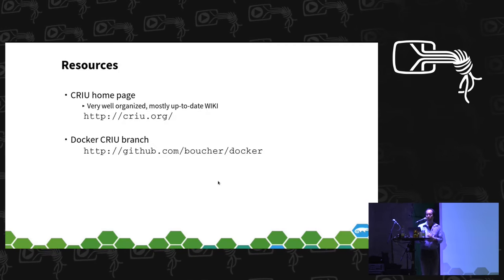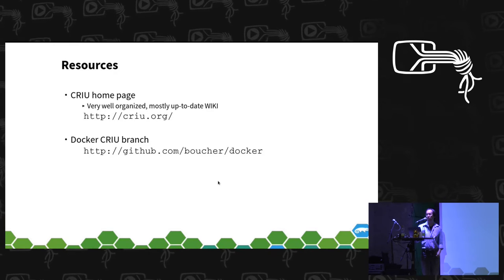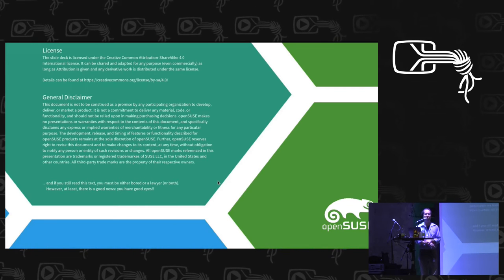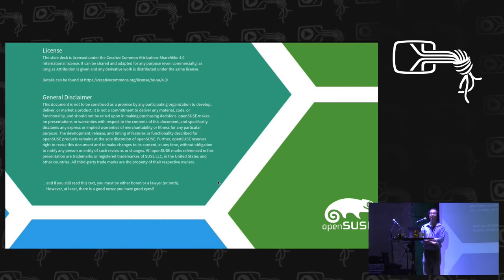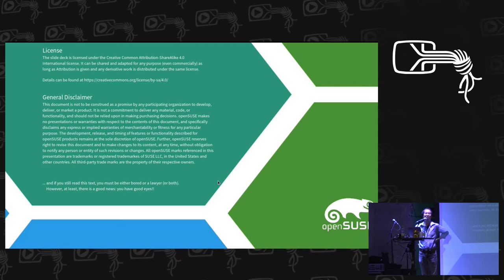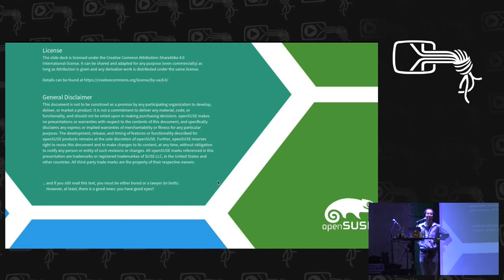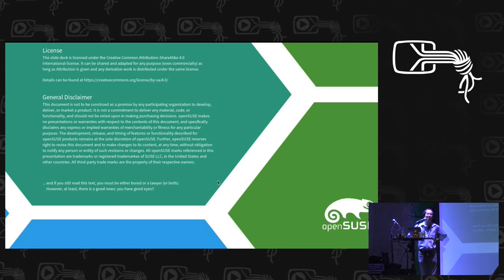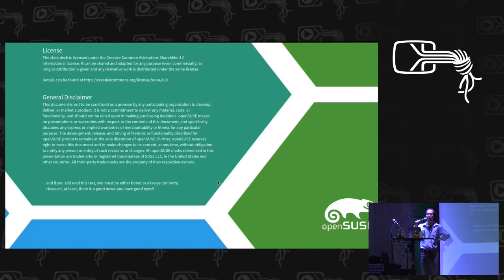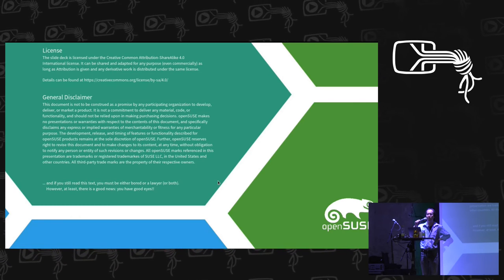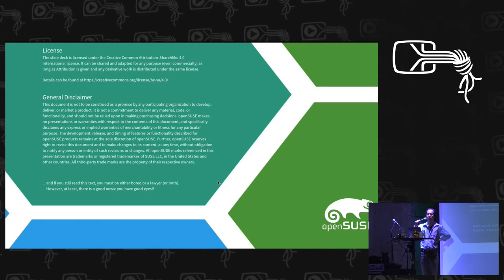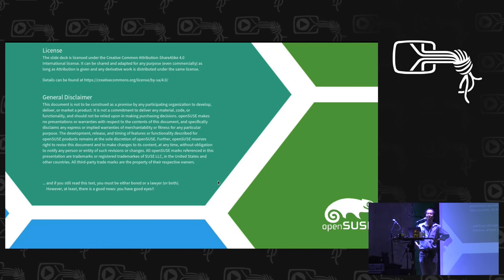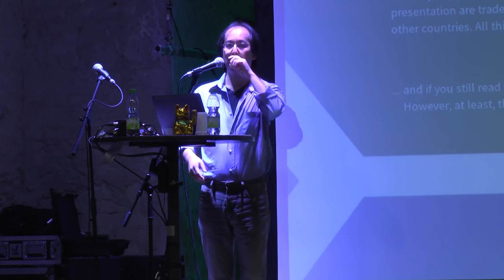That's all. You can find CRIU's homepage with a very well-organized and up-to-date wiki. Time is almost up — maybe one question. An audience member asks: can you use CRIU to suspend a process and resume it on another node in HA environments? Yes, that is correct.